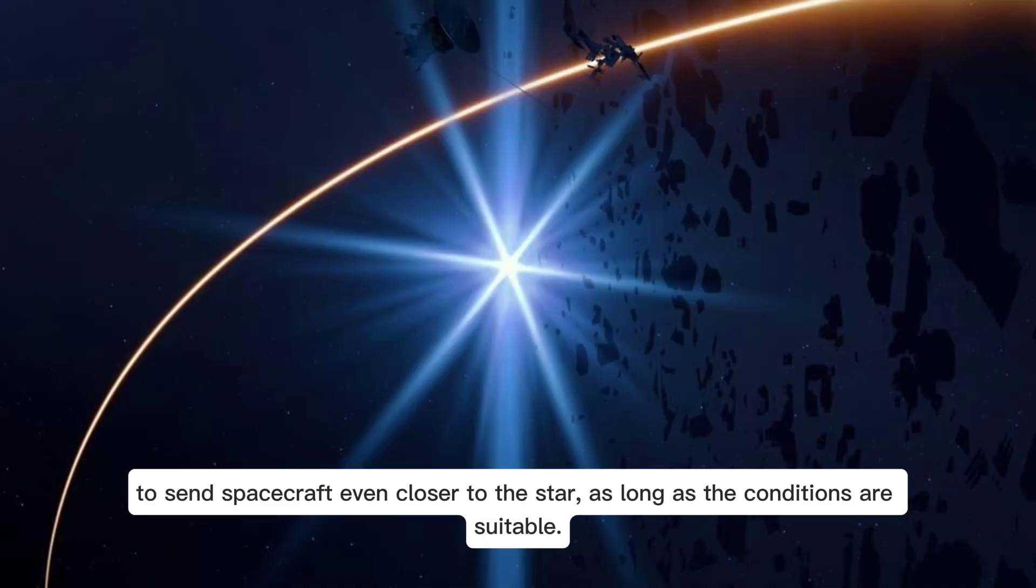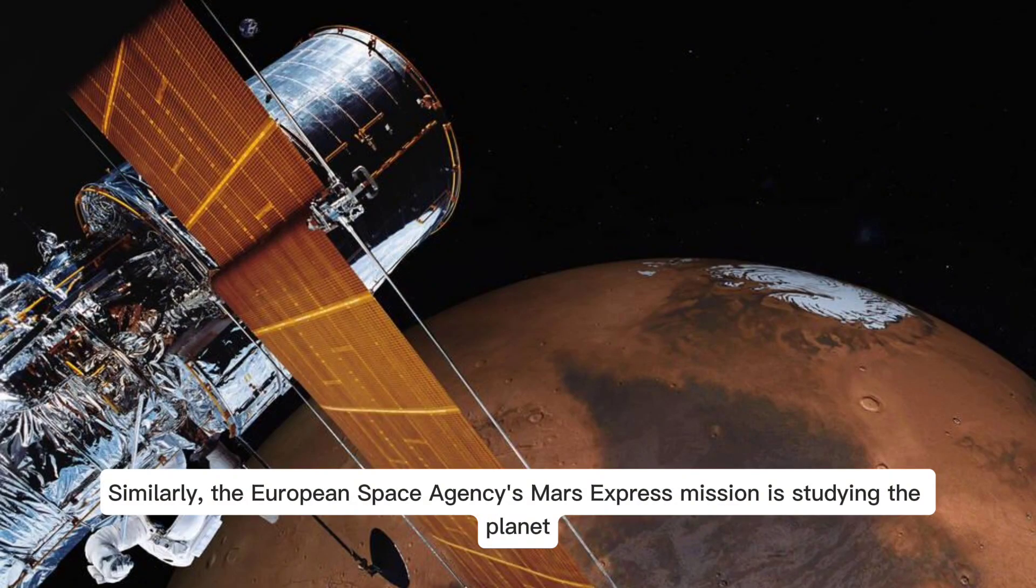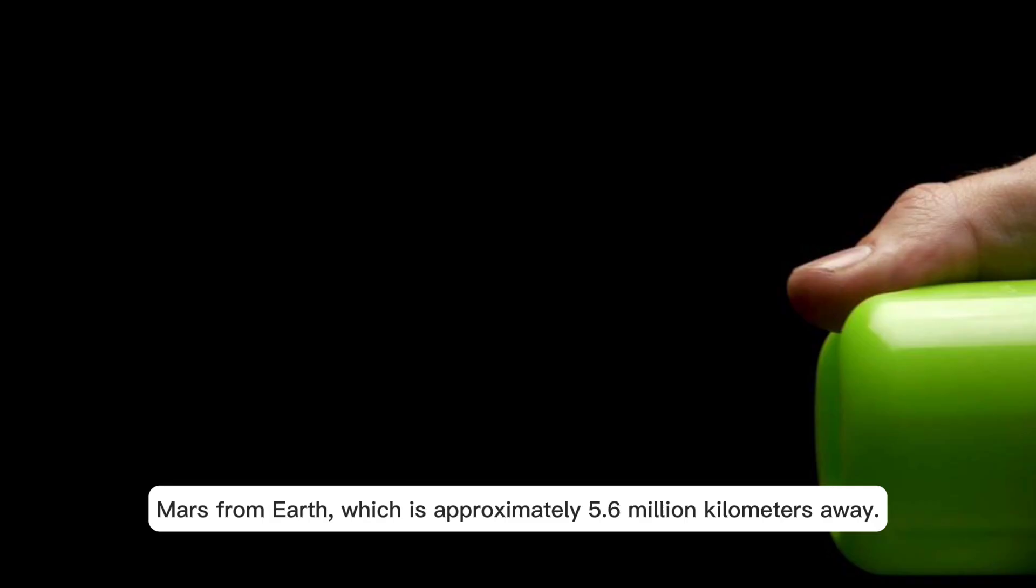In fact, recent advances in space technology have made it possible to send spacecraft even closer to the star, as long as the conditions are suitable. For example, the NASA Curiosity rover is currently exploring the Martian surface, which is only 4.6 million kilometers away from Earth. Similarly, the European Space Agency's Mars Express mission is studying the planet Mars from Earth, which is approximately 5.6 million kilometers away.